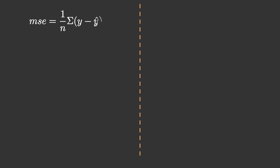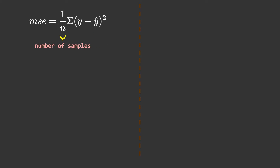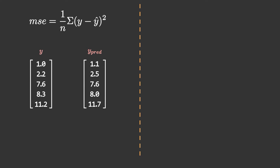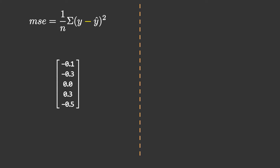First let's discuss the regression loss function: mean squared error. Mean squared error is a simple yet robust loss function. Here y is the actual output, y-hat is the predicted value, and n is the number of samples. The easiest thing to calculate error is to subtract y and y-hat, and that's what we are doing. If we have two matrices and we wish to find the mean squared error, first we have to subtract them.